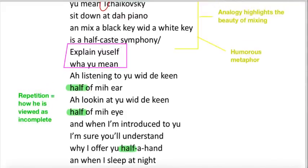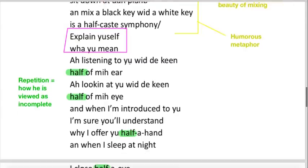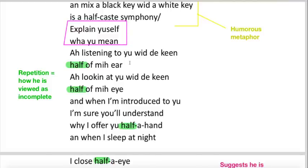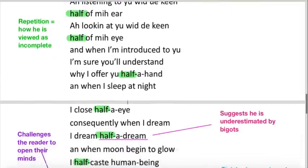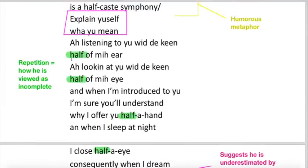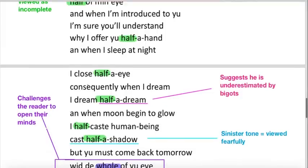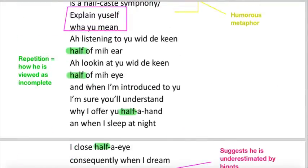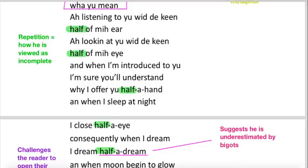Explain yourself what you mean. I'm listening to you with the keen half of me ear. I'm looking at you with the keen half of me eye. And when I'm introduced to you, I'm sure you'll understand why I offer you half a hand. And when I sleep at night, I close half an eye. Consequently, when I dream, I dream half a dream. And when moon begin to glow, I half caste human being cast half a shadow. I've highlighted half is repeated on almost every line. I think it really bugs him this idea that he is considered half a person. He's using imagery to paint this ridiculous image of him being half a person, taking it quite literal by saying half of his ear, half of his eye, half a hand, half a dream.